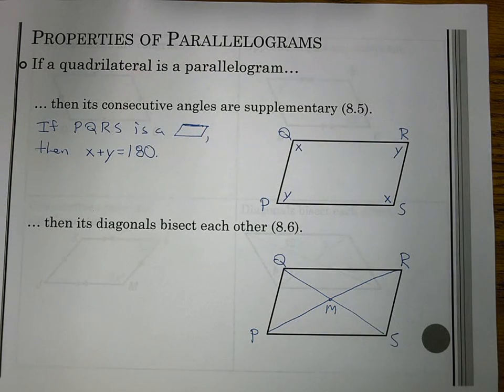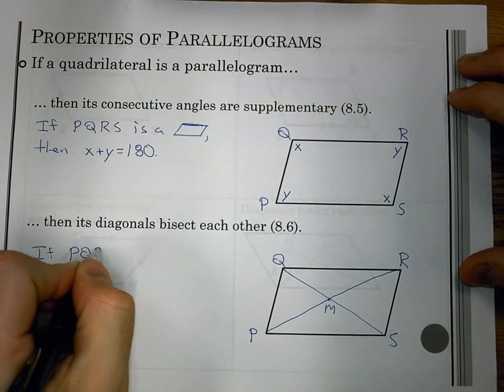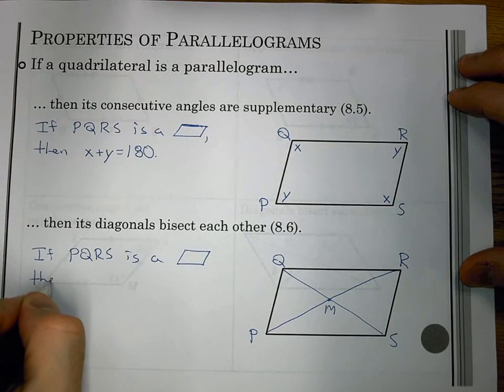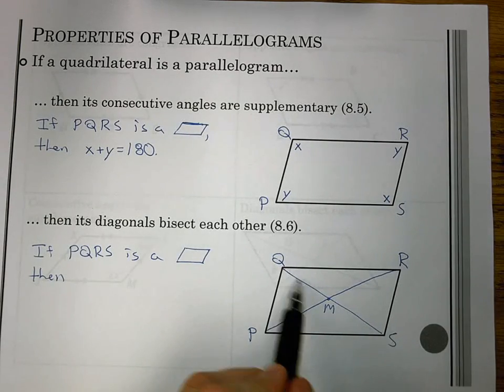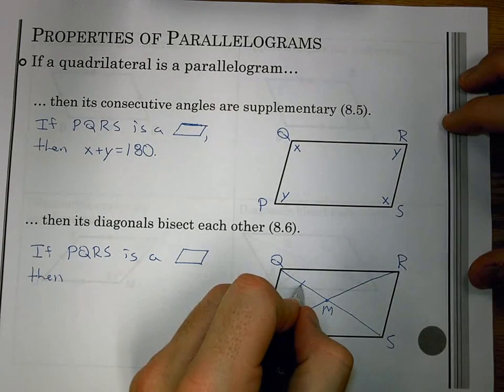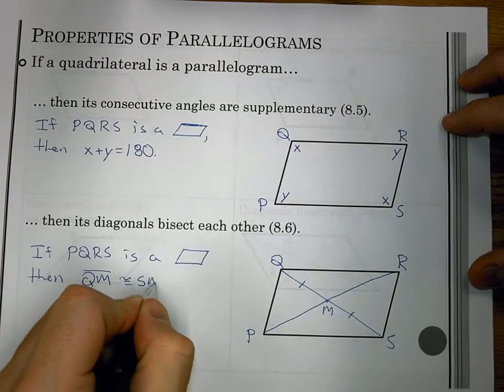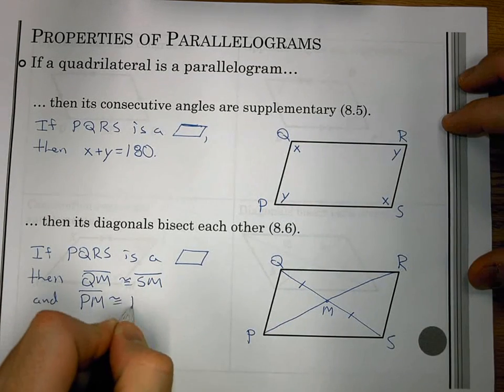Our final one, if a quadrilateral is a parallelogram, then its diagonals bisect each other. So if PQRS is a parallelogram, we'll see how we're going to represent diagonals bisecting each other. I've drawn my diagonals. They intersect at point M. So to say that they bisect each other means that QM is congruent to SM and PM is congruent to RM.